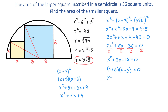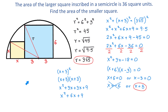So we have (x plus 6)(x minus 3) equals 0. This means x plus 6 equals 0 or x minus 3 equals 0. Solving the first gives x equals negative 6, and solving the second gives x equals positive 3. Since x represents the side of a square, x cannot be negative, so we discard x equals negative 6. The only solution is x equals 3. The area of the square is 3 times 3, which equals 9 square units.